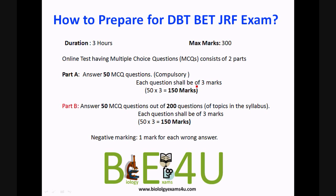In Part B, you have 50 questions to answer out of 200 questions from the syllabus, and you will have 150 marks with each question carrying three marks. There is negative marking — one mark is deducted for each wrong answer.